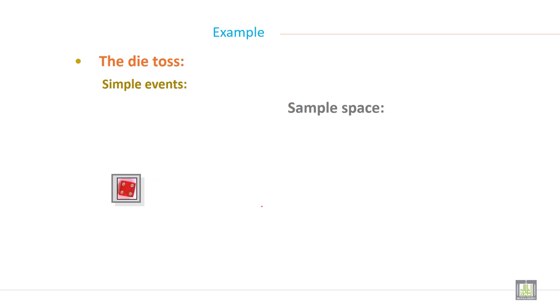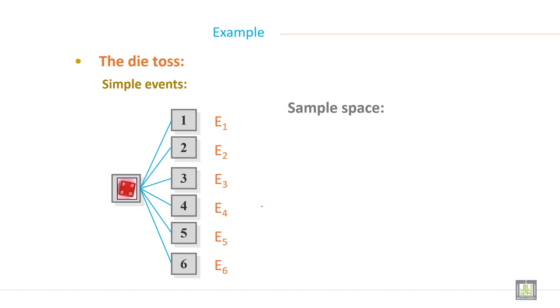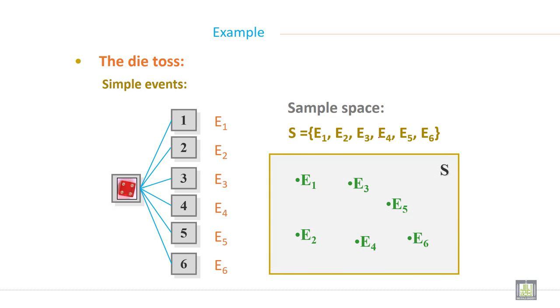The die toss. Simple events: this is the die toss. You have simple events like 6 outcomes there for our dies. So all this is called sample events. S equals E1, E2, E3, E4, E5, E6. This is the sample space.